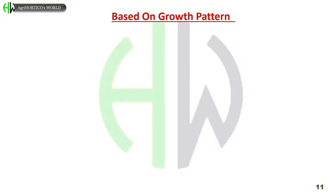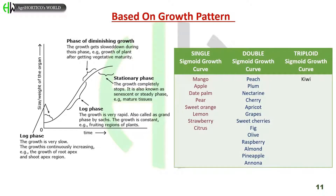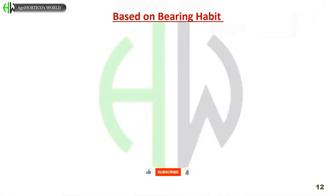Another major classification is based on growth pattern. Single sigmoid growth curve is observed in mango, apple, date palm, pear, sweet orange, lemon, strawberry, and citrus. Double sigmoid growth curve is observed in peach, plum, nectarine, cherry, apricot, grapes, sweet cherries, fig, olive, raspberry, almond, and pineapple. Triple sigmoid growth curve is observed in kiwi fruit.